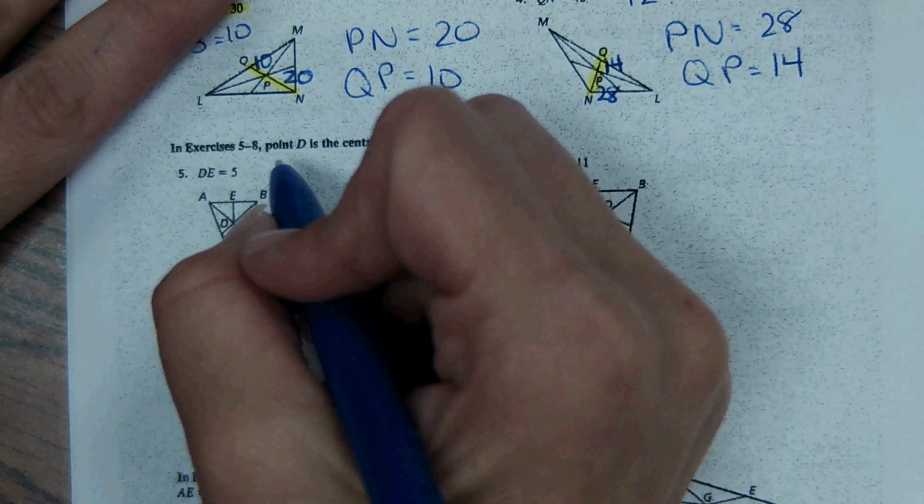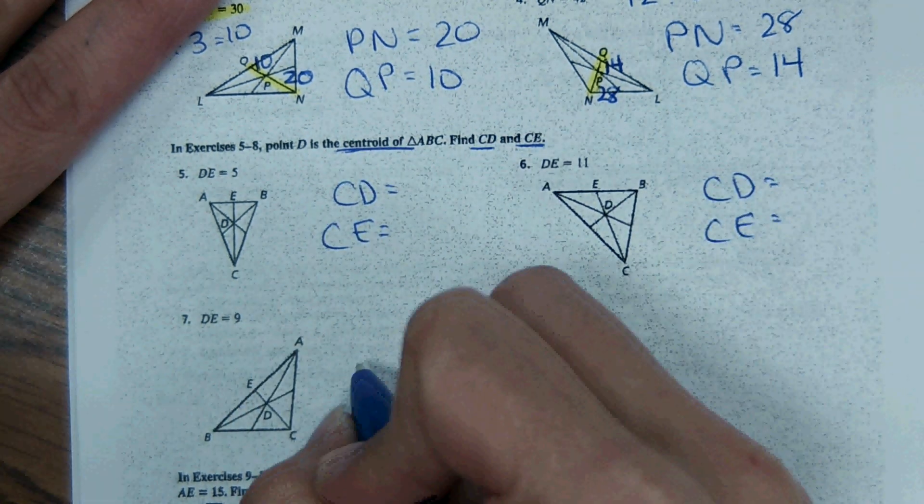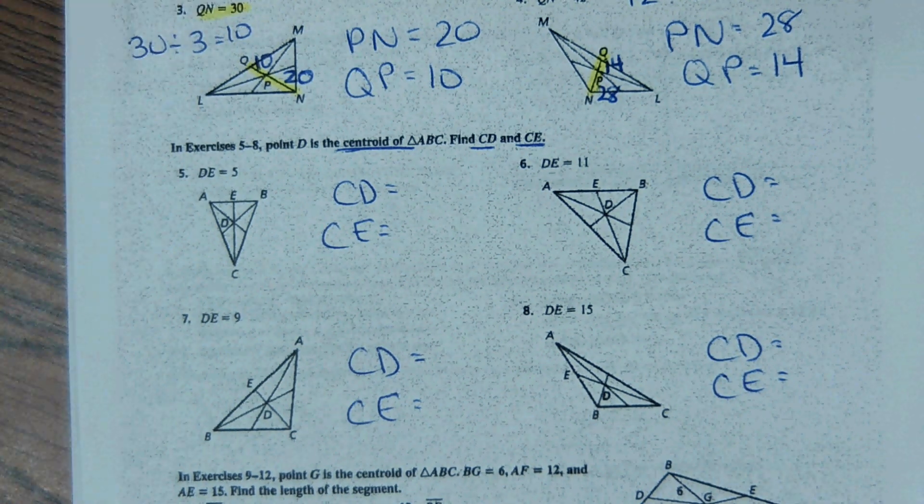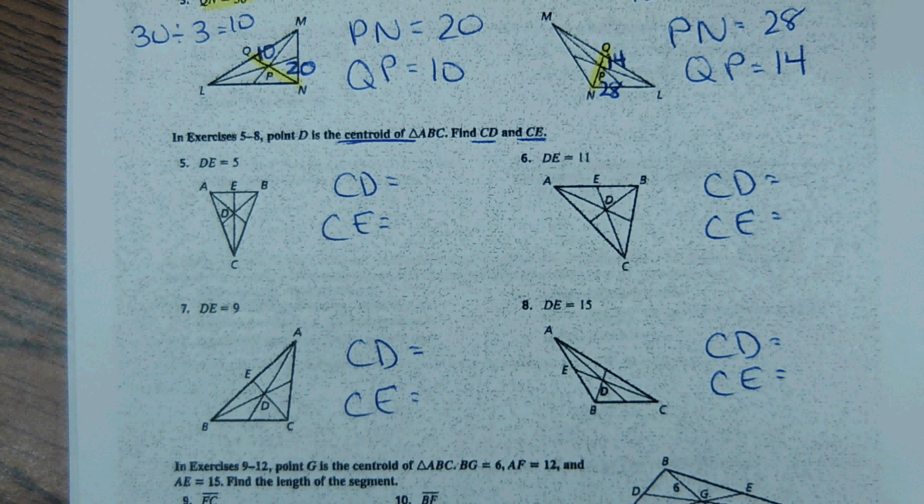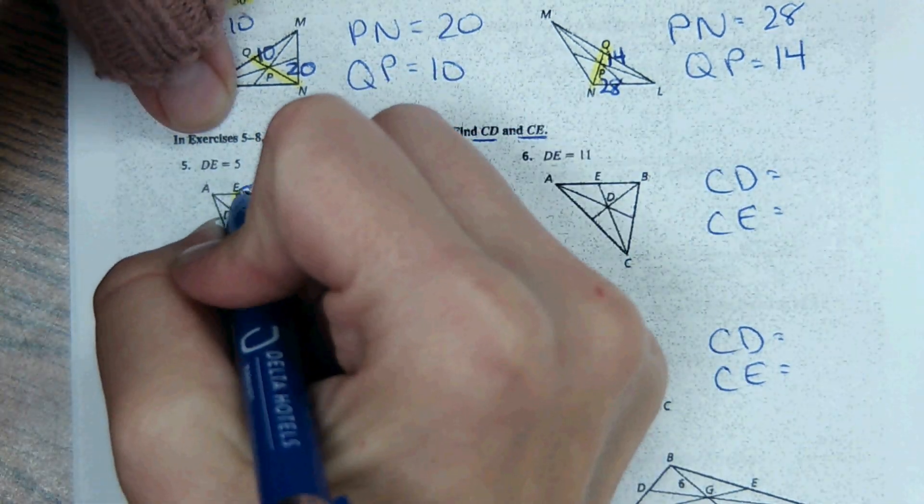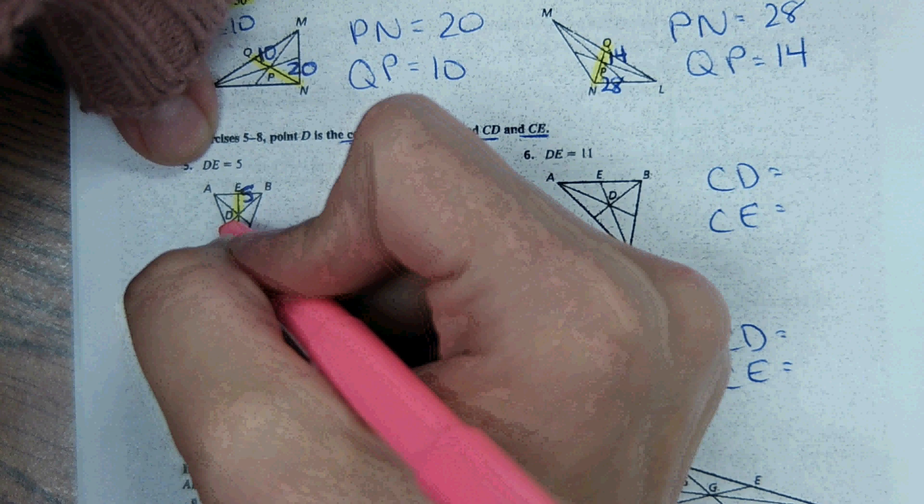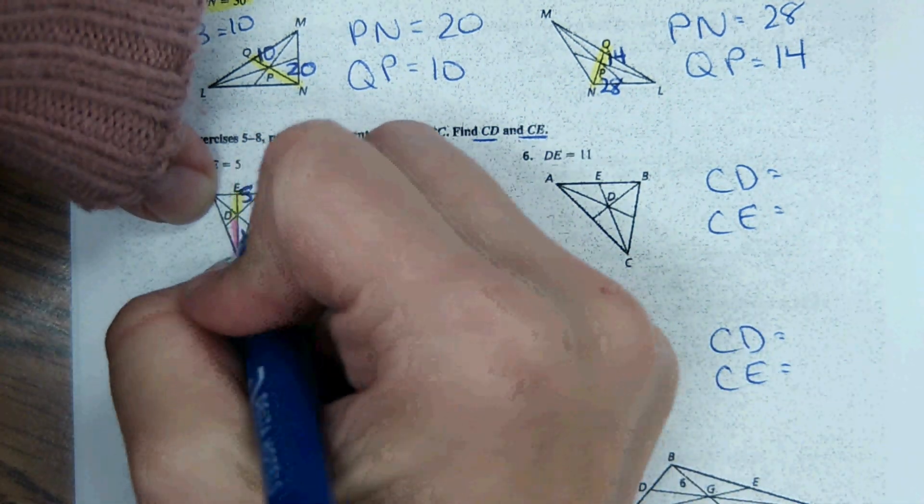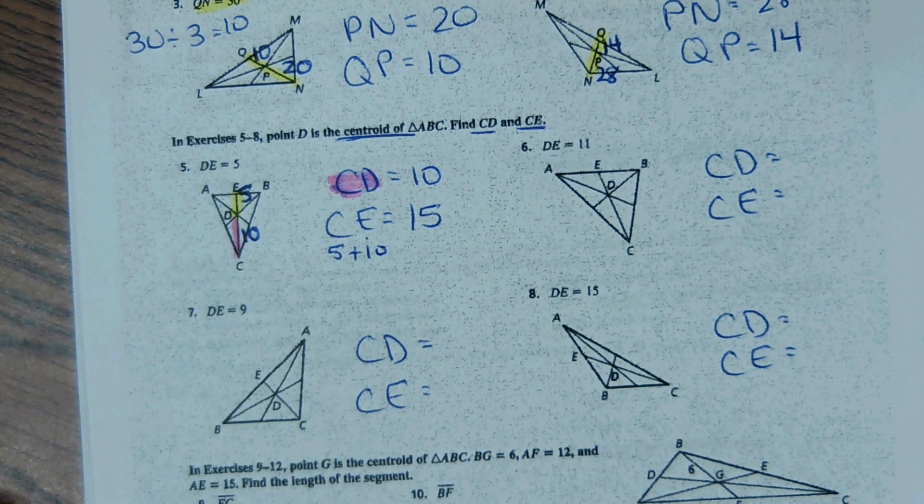So in the next portion, it says point D is the centroid of the triangle. Find CD and CE. So for this one, it says that DE is 5. So DE right here is 5. And then it wants to know the length of CD, which is the longer part of the segment. And then it also wants to know CE, which is like the whole thing. So CD is the longer part of the segment, which would be double the 5, so it would be 10. And then CE, just using segment addition, 5 plus 10 is 15.